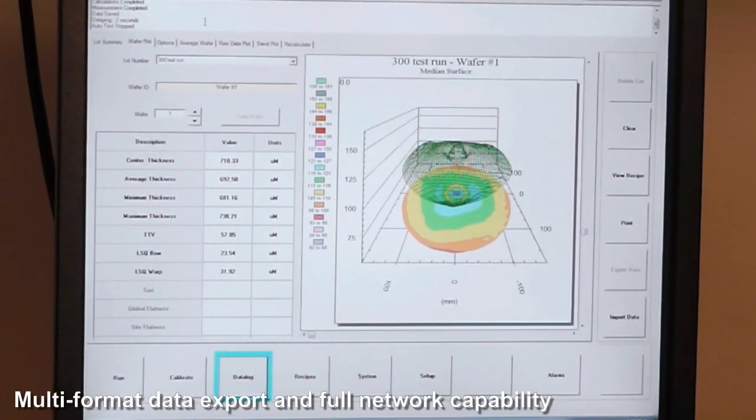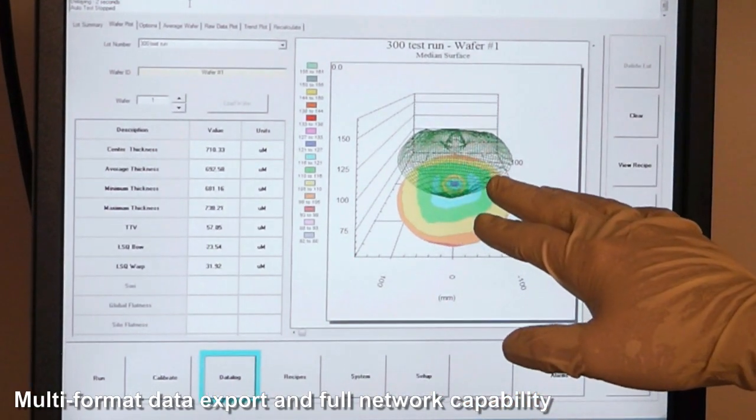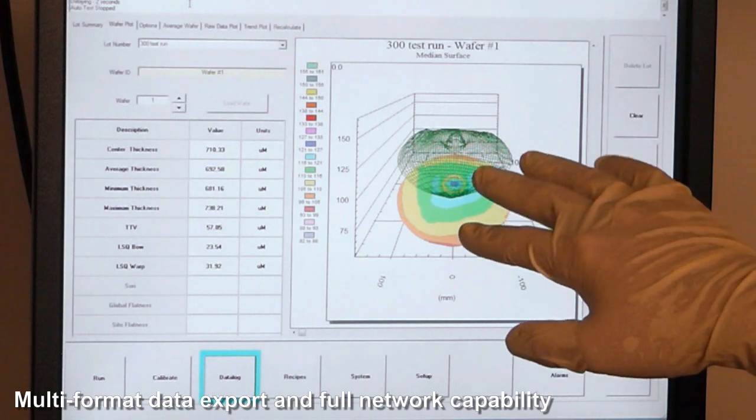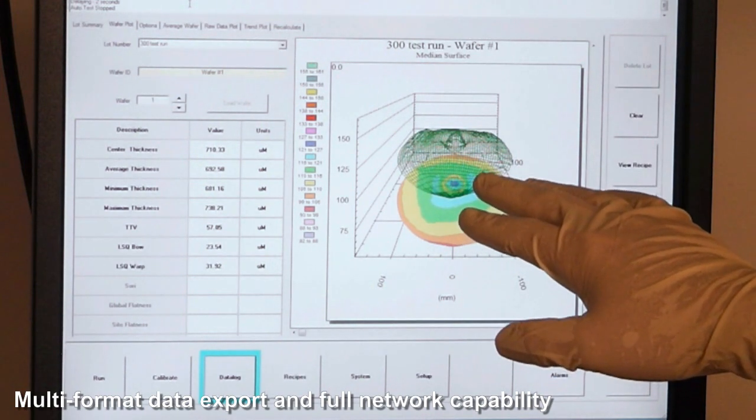The Proforma 300 tool produces statistics as well as a map of the wafer. And we can see on the microscopic scale, the map of the wafer looks like a potato chip on the microscopic scale.